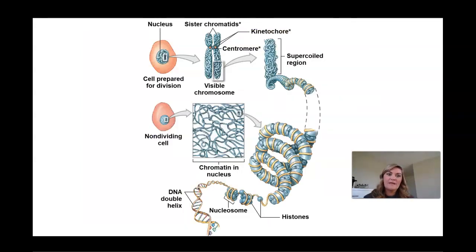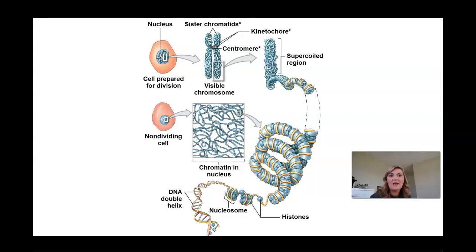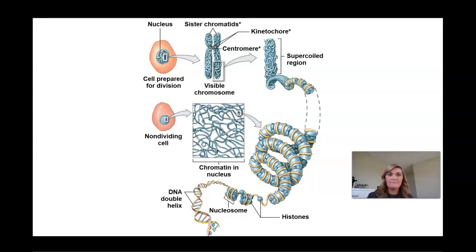When a cell prepares for division, the chromatin condenses and wraps itself around proteins called histones — they look like little beads — creating a condensed form called a chromosome. Those chromosomes have centromeres in the center connecting the two chromatids, with kinetochores right there at each centromere. Many people think of chromosomes as X-shapes, but a chromosome is actually made up of two sister chromatids — one from your mother and one from your father — which work together to produce the genes and characteristics exhibited in your body.